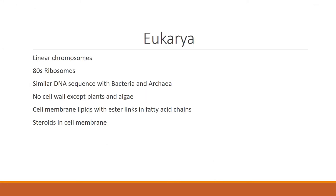The first domain is Eukarya, or eukaryotes. They have linear chromosomes, 80S size ribosomes, a similar DNA sequence with bacteria and archaea. No cell wall except for plants and some algae. The cell membrane has lipids with ester links and fatty acid chains, and there are also steroids in the cell membrane.